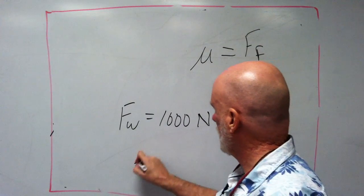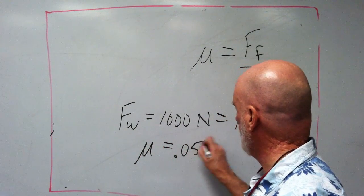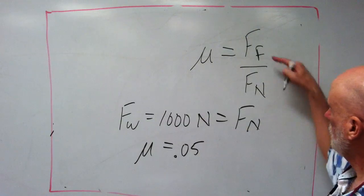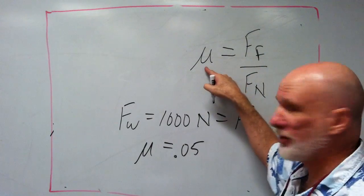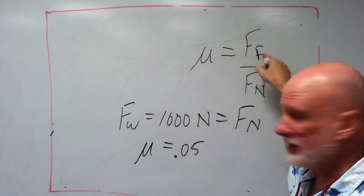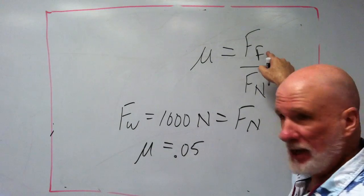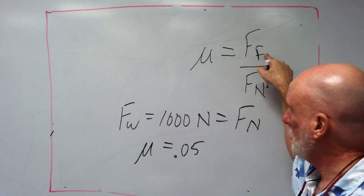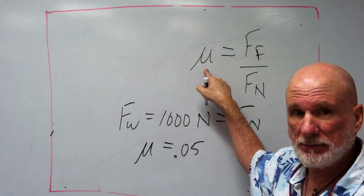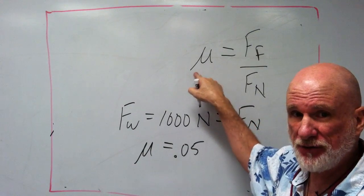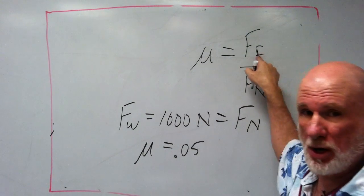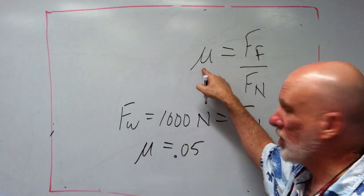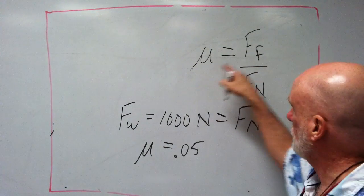We know that the coefficient of friction is 0.05. You see, the smaller this value, as that's constant, as that approaches zero, that's going to approach zero. So the smaller the coefficient of friction is, the smaller the force of friction. But as long as that's something greater than zero, you're going to have a force of friction.